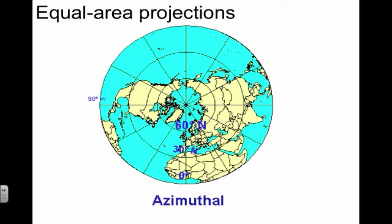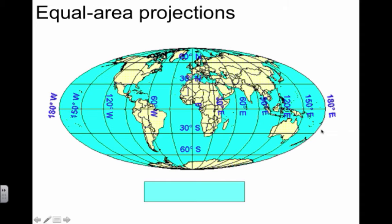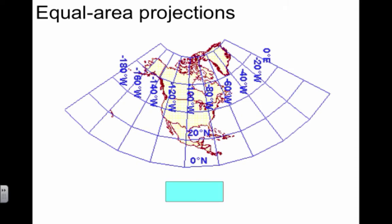This is an azimuthal projection—a planar projection. You need to know these words. This is a Mollweide projection. The idea is to maintain equal area, not worrying about angular preservation of the polygons. This is a conic projection, as we saw before.